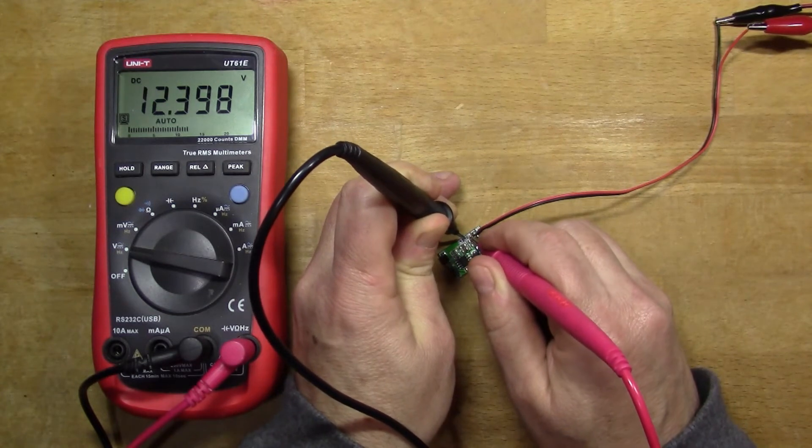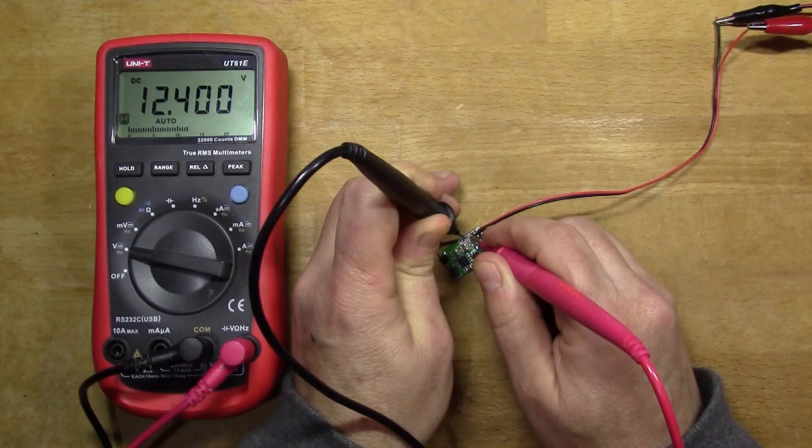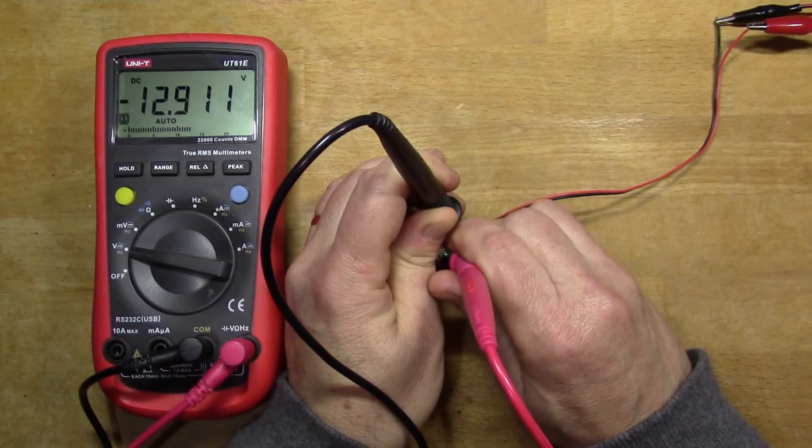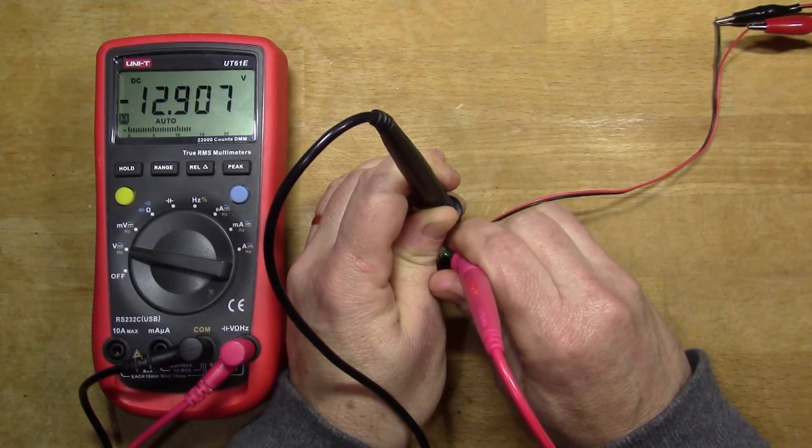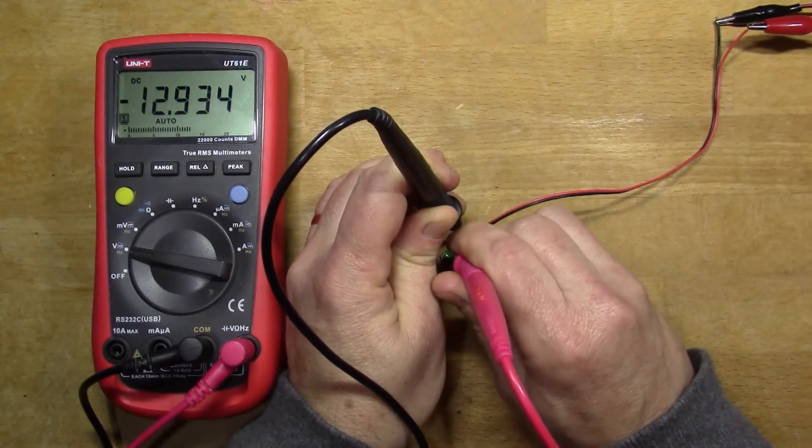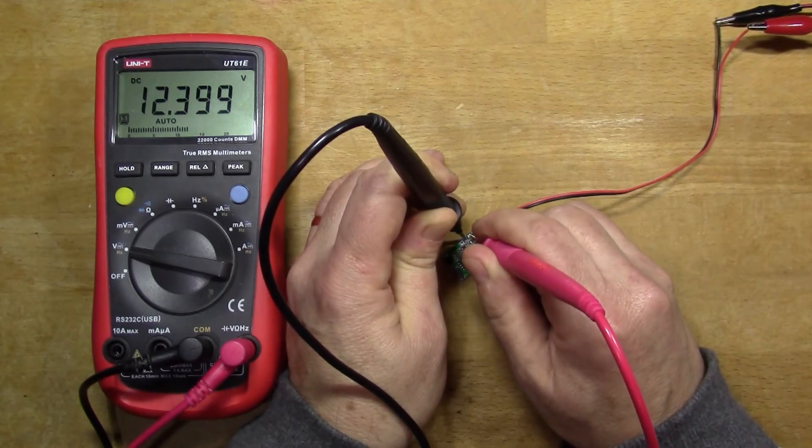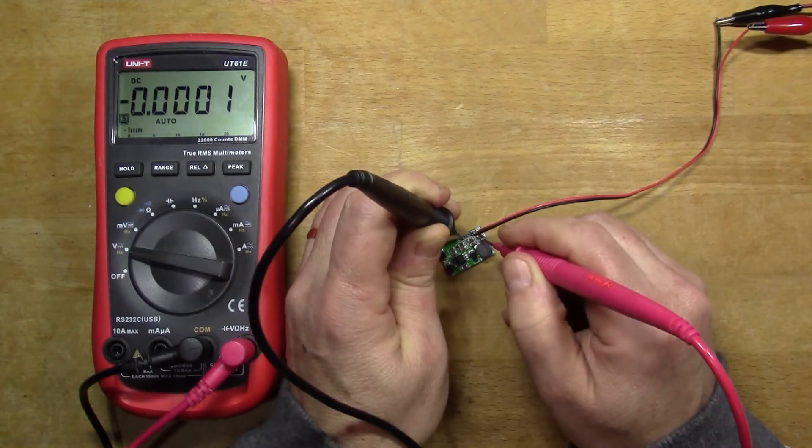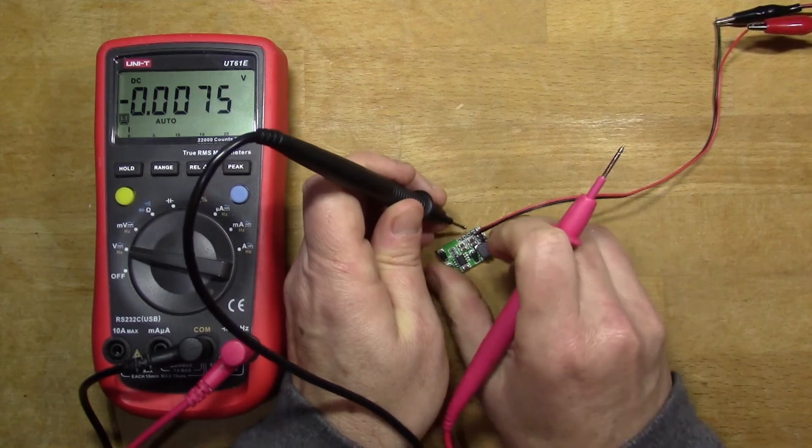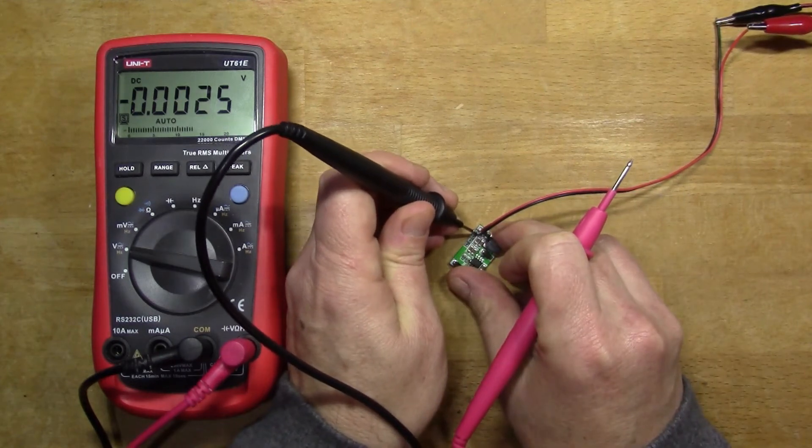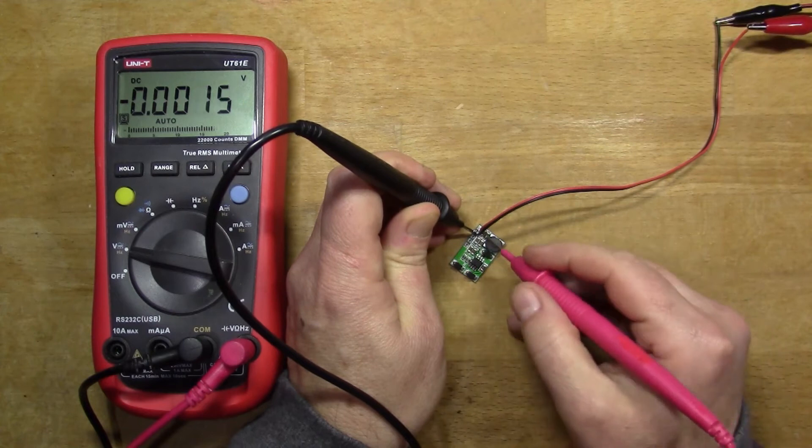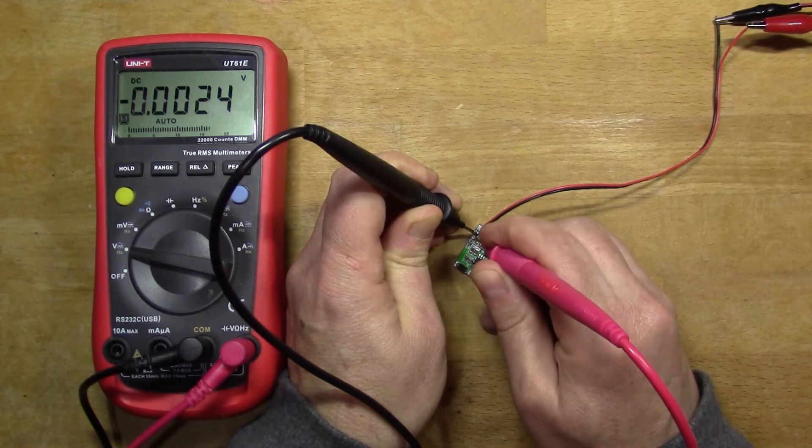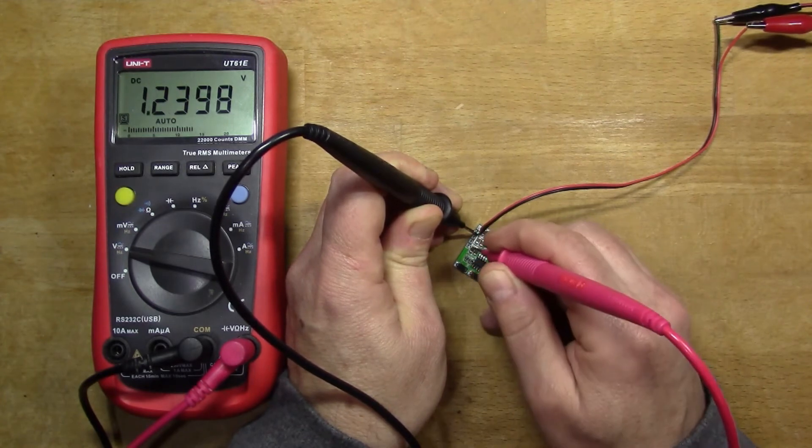So there we've got 12 volts, plus 12 volts on that side and minus 12, so that's minus 12.9. What's on that side? Plus 12.4. So we got a good split rail power supply there.